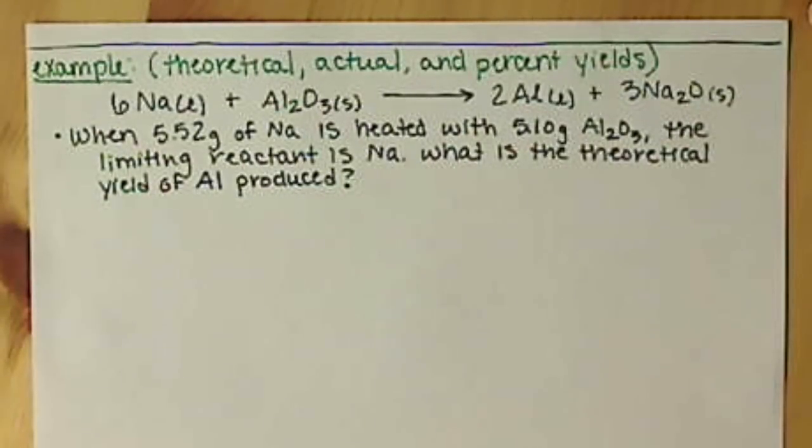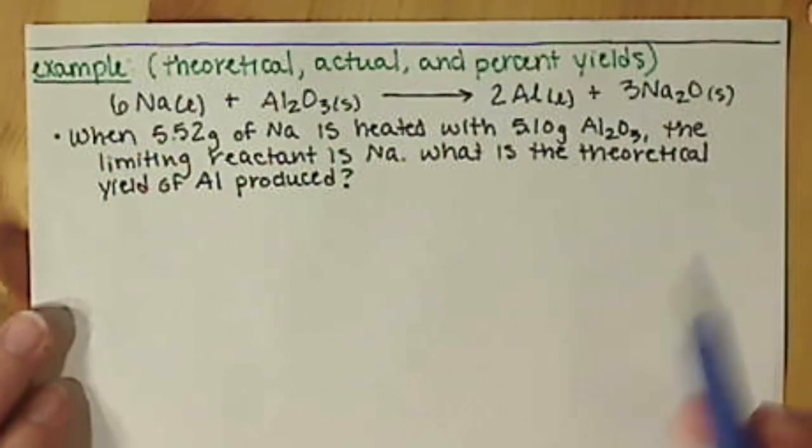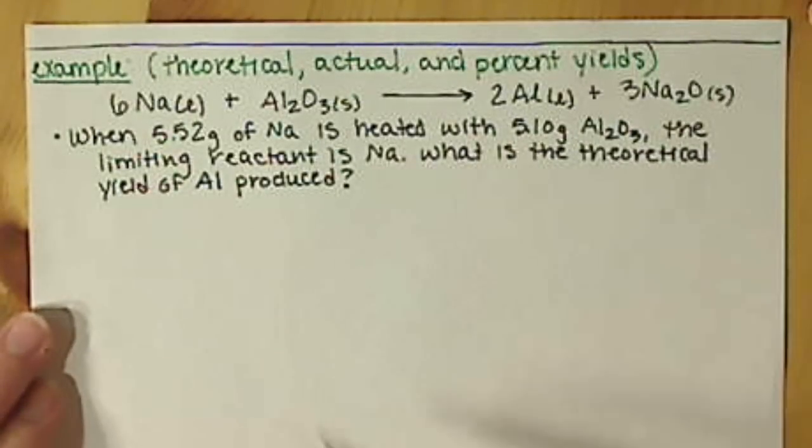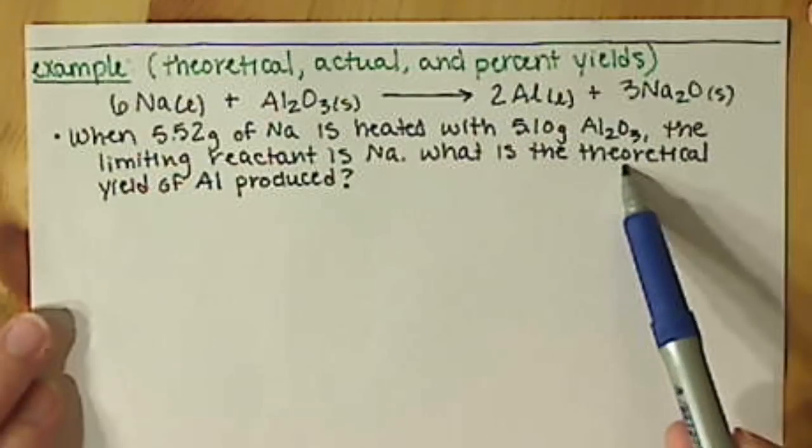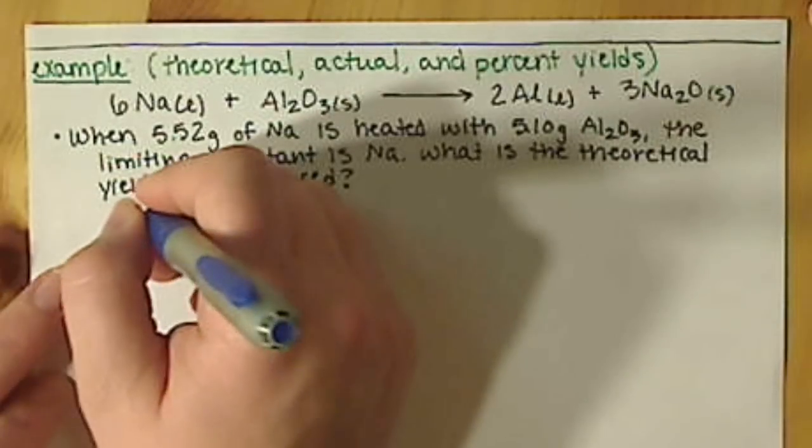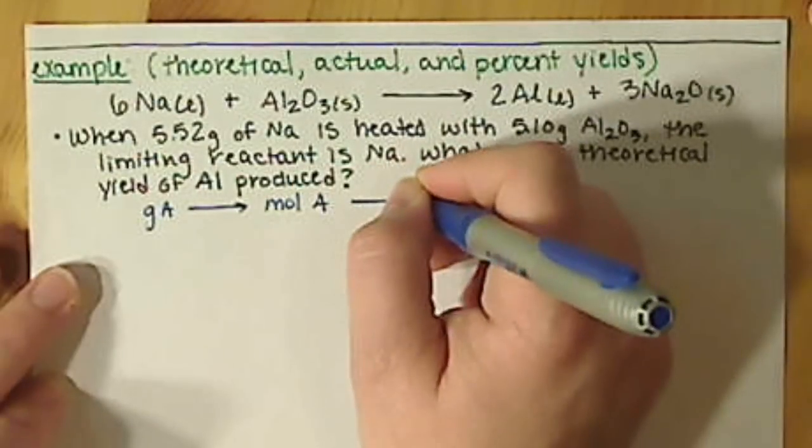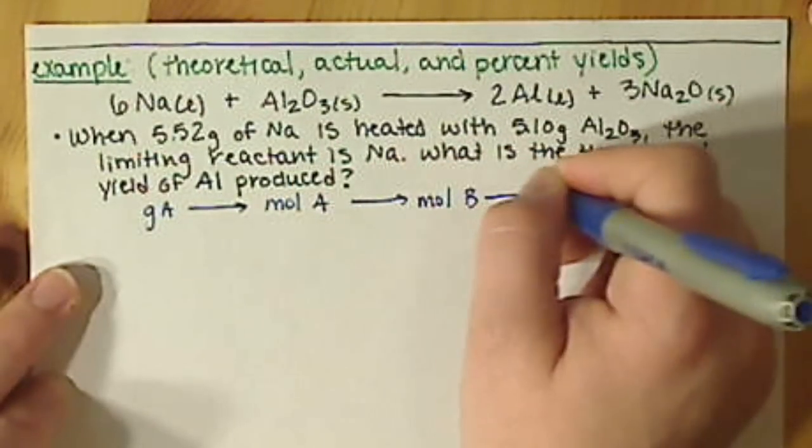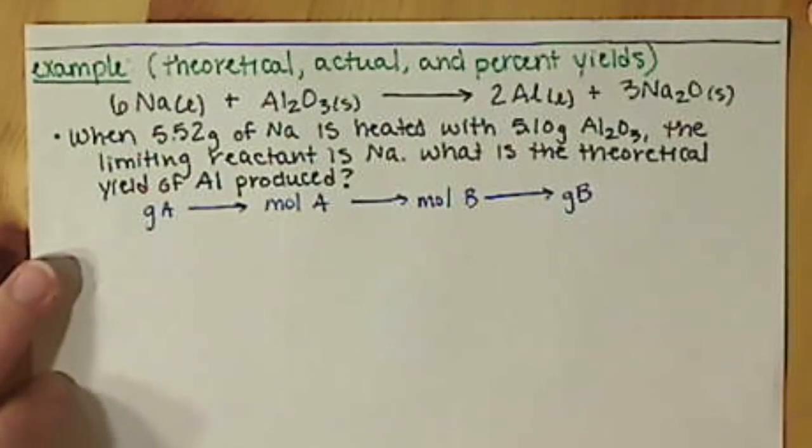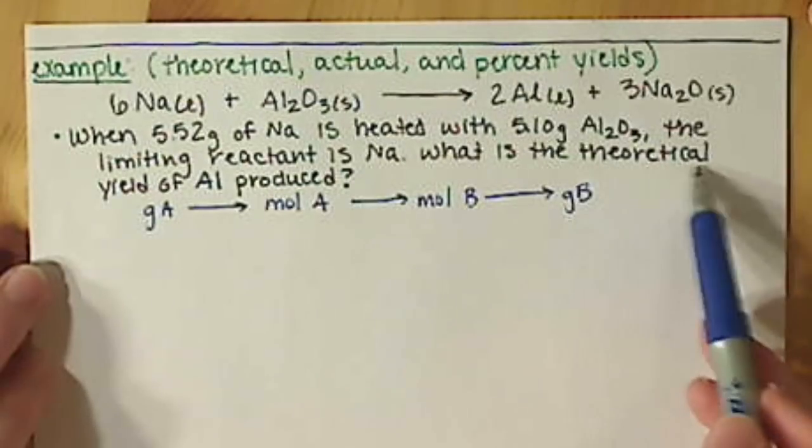The previous calculations that we did on the previous video to determine the limiting reactant is not necessary in this problem, because we're told what the limiting reactant is. So, to figure out the theoretical yield...